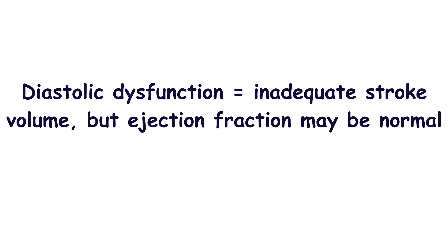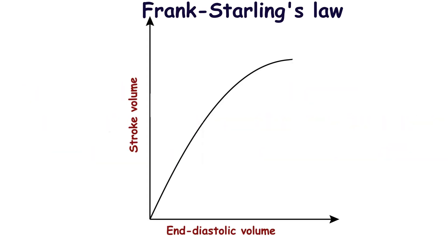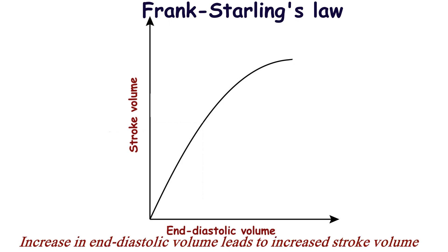In the case of diastolic dysfunction, the ejection fraction is normal, but stroke volume may be decreased. It is due to increased ventricular wall stiffness and the ventricle cannot be normally filled. During diastole, the ventricle receives less volume of blood and respectively pumps a small amount of blood. According to the Frank-Starling law, stroke volume increases in response to an increase in end-diastolic volume. A large volume of blood flowing into the ventricle leads to stretching of cardiac muscle fibers, resulting in an increase in the force of contraction.